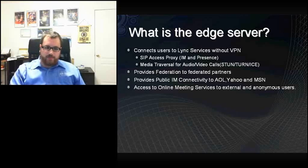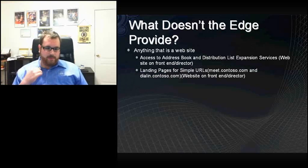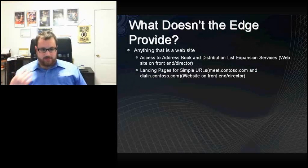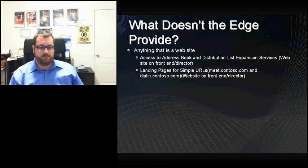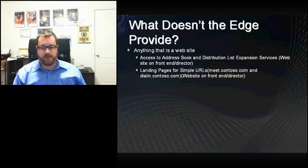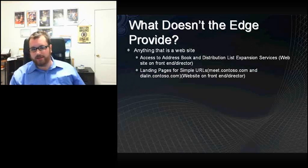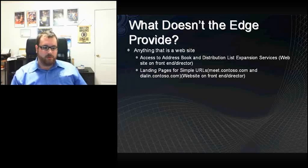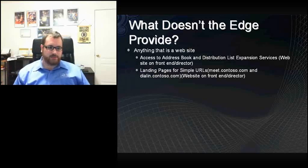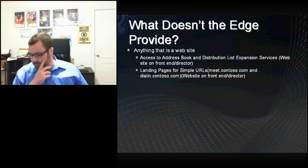What the Edge doesn't provide is anything that's a website — that's where the reverse proxy rule comes in. This covers the address book, DL expansion, which is a website on the front-end director, and the landing pages for the simple URLs — meet and dial-in — which are also websites on front-end or director. The simplest way to put it: anything that is a website goes to the reverse proxy; everything else that's protocol-based, SIP protocol-based, goes to the Edge server.